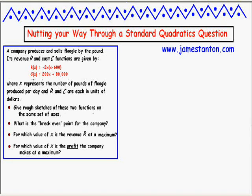Its revenue and cost functions are given by r(x) = -2x(x - 600), and the cost function is c(x) = 200x + 80,000. Here, x represents the number of pounds of flugel produced per day, and r and c are each in units of dollars.